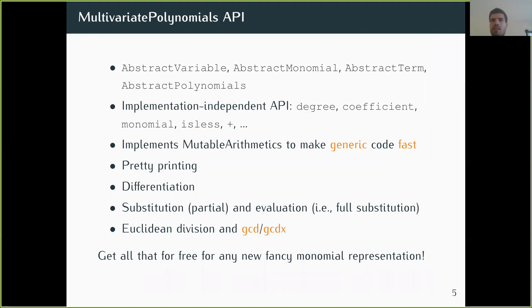So the MultivariatePolynomials package actually provides this. It has these abstract types and abstract API. And then once your monomial representation implements these things, you have the rest for free. You have an implementation of polynomials that implements the MutableArithmetic API so that you can have fast addition and multiplication.